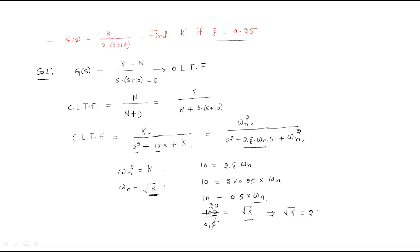From √K = 20, squaring both sides gives K = 20² = 400. So the answer is K = 400. To summarize: when zeta is given for a second-order system with an open loop transfer function, convert to closed loop, compare with the standard form, and solve for the unknown.